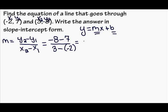So now I'm going to simplify. -8 - 7 is -15. 3 minus a -2 is the same thing as 3 + 2, which is 5. -15 divided by 5 is -3.